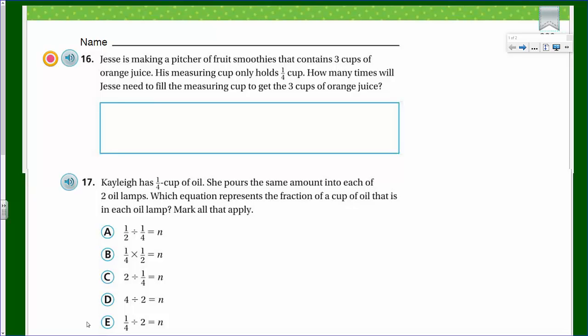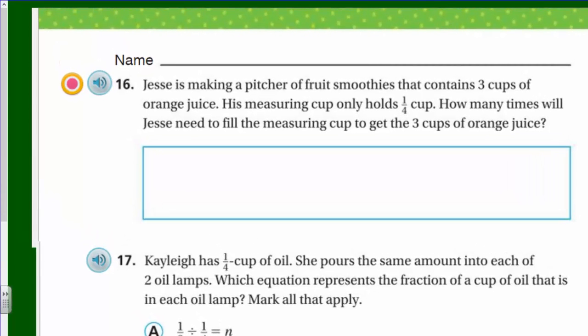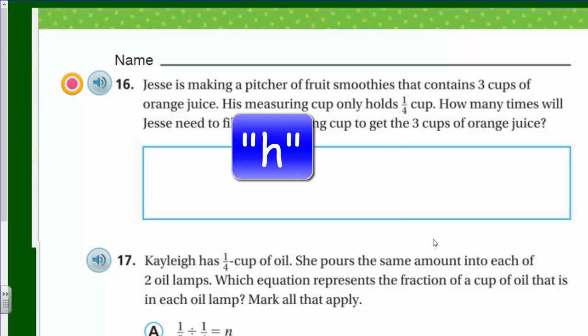Jesse is making a pitcher of fruit smoothies that contains 3 cups of orange juice. His measuring cup only holds 1/4 cup. How sad, very sad. How many times will Jesse need to fill the measuring cup to get the 3 cups of orange juice? I would say a very long time. He could be waiting until next Christmas by the time he gets that done. How can we solve that?